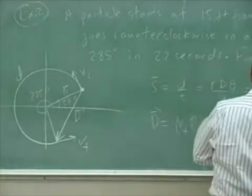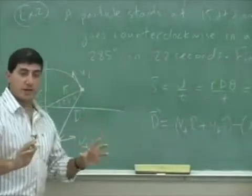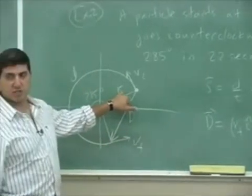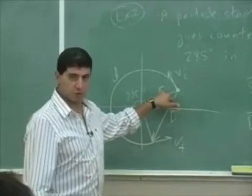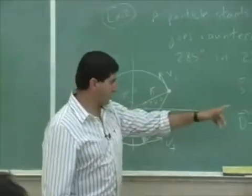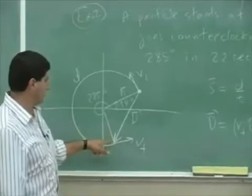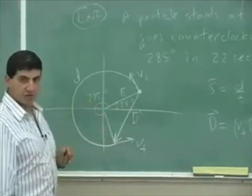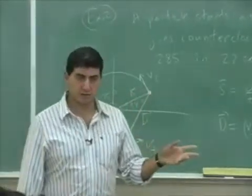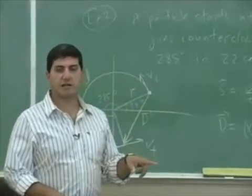So one way to do the displacement would be to break down the initial position of the particle into its x and y component. So 15 cos of 34, the y component would be 15 sine of 34. The final component will be 15 cosine 285, 15 sine 285. You could do it that way. The other way of doing it is by the law of cosines.